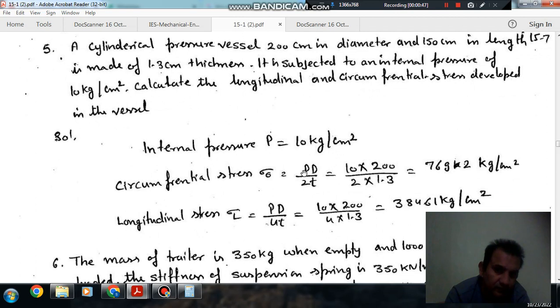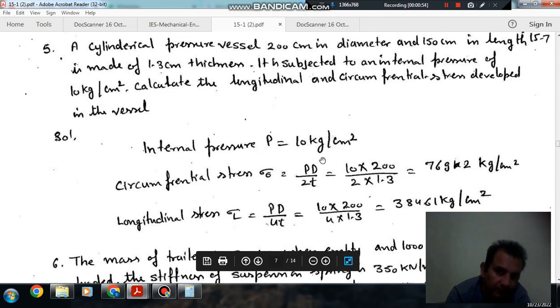For a thin pressure vessel, the circumferential stress is PD/2t and longitudinal stress is PD/4t, where P is 10 kg per cm², diameter is 200 cm, and t is 1.3 cm.